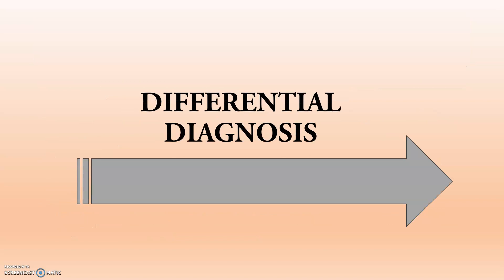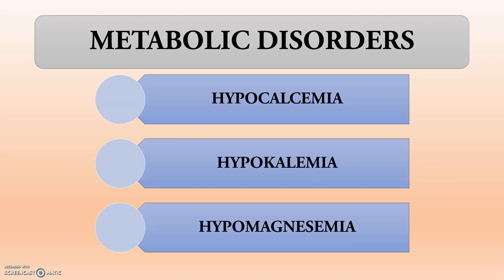Moving to the most important part of this video — the differential diagnosis we might rule out in case of Downer Cow. In any Downer case, we should always check the blood, serum parameters, and electrolytes, and also perform a proper clinical examination. The first differential category is metabolic disorders: hypocalcemia, hypokalemia, and hypomagnesemia. Downer Cow is very common in case of hypocalcemia, hypokalemia, hypomagnesemia, and also in case of severe ruminal lactic acidosis.